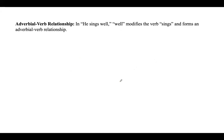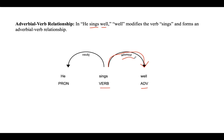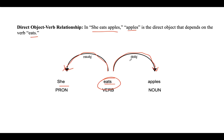The last grammatical relationship is the adverbial-verb relationship. If you take the sentence 'he sings well', 'well' modifies the verb 'sings' and forms an adverbial-verb relationship. This adverb modifies the verb — you can see the relationship between verb and adverb, where 'well' modifies 'sings', represented with an adverb modifier. In the previous case, that was a direct object-verb relationship.